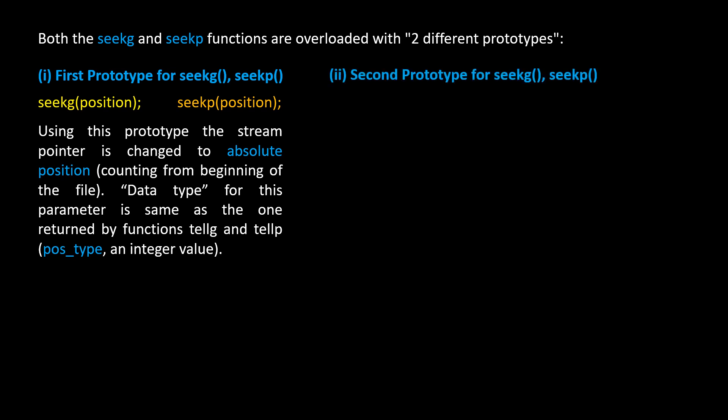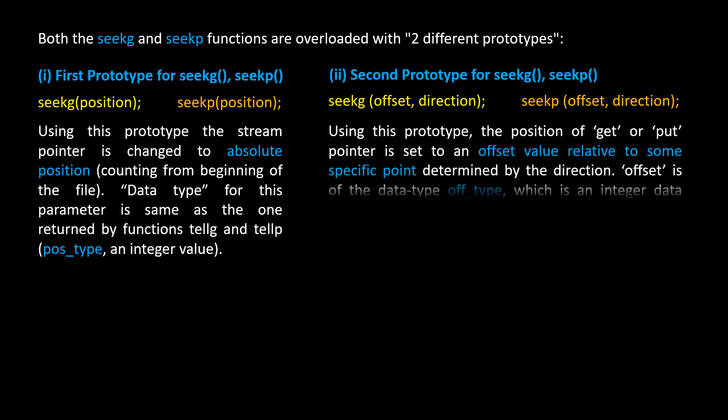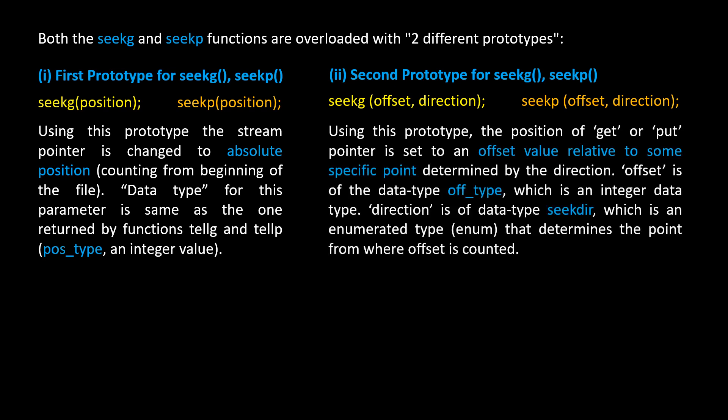The second prototype — seekg(offset, direction) and seekp(offset, direction) — sets the position of the get or put pointer to an offset value relative to a specific point determined by the direction. Offset is of data type off_type, which is an integer. Direction is of data type seekdir, an enumerated type that determines the point from where the offset is counted.